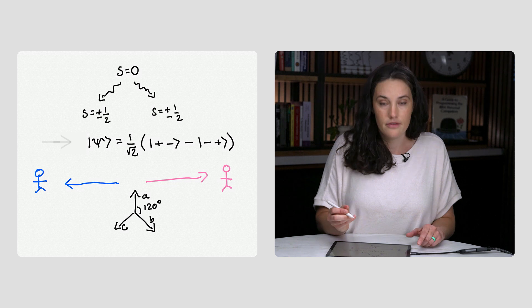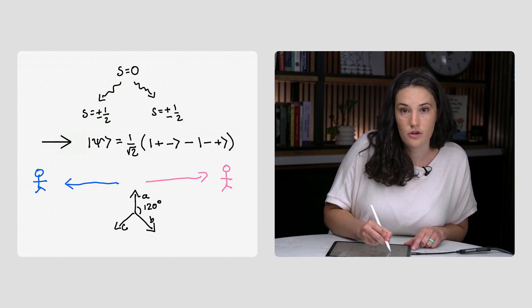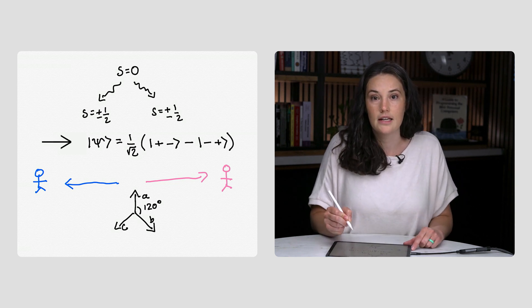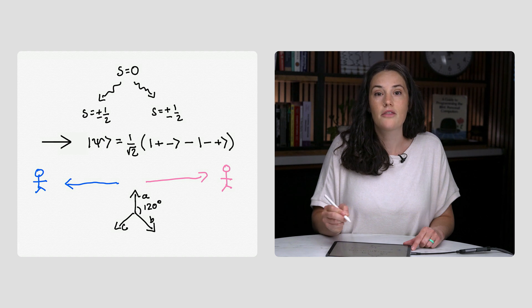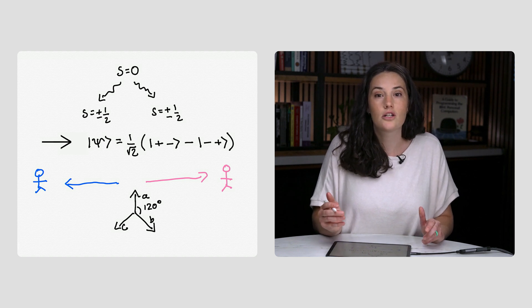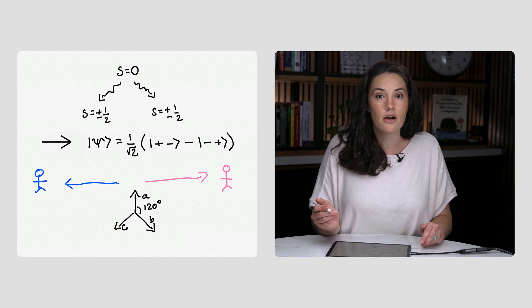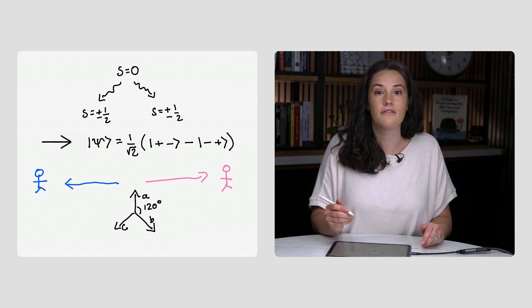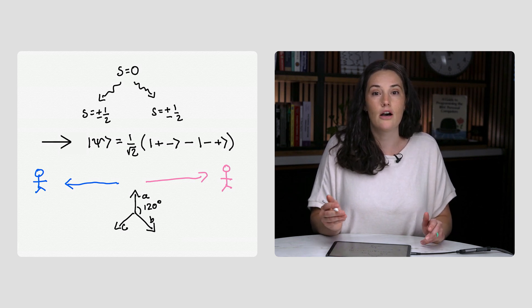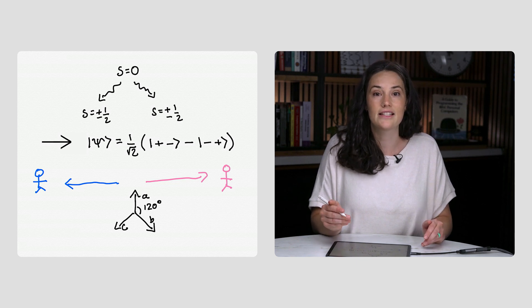According to Einstein, this quantum mechanical description of the particle's state is incomplete. He thought there must exist hidden variables that predetermine the outcome of all possible spin measurements, since without that, entangled particles would have to somehow communicate the outcome of their measurement to one another instantaneously.